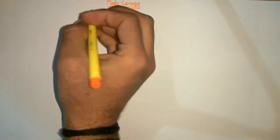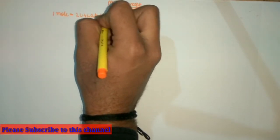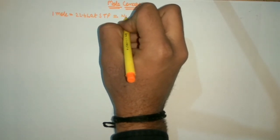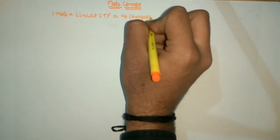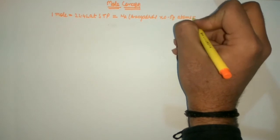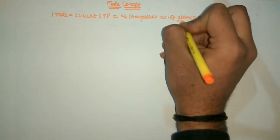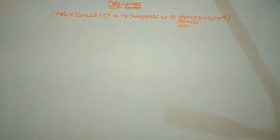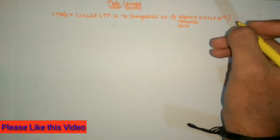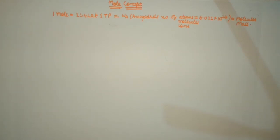Basically, the mole concept is governed by the relation that 1 mole is equal to 22.4 liters at STP, is equal to Avogadro's number of atoms, which is equal to 6.022 into 10 to the power 23. In place of atoms, Avogadro's number of molecules or ions can also come — any one of these three.